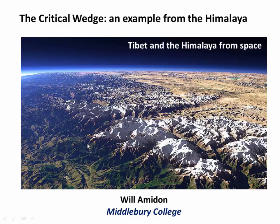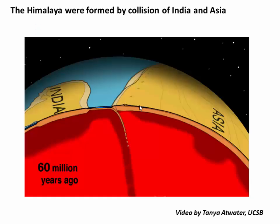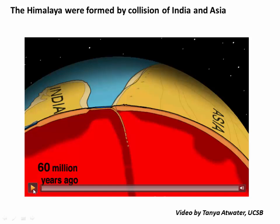A lot of the answers to these fundamental questions come from what's called critical wedge theory. In this video, I'm going to give you a quick overview of the Himalaya, then explain what critical wedge theory is and how it predicts the shape, size, and shortening dynamics of the Himalaya, and then we'll finish with an example of how focused orographic precipitation in the front of the Himalaya can change the shape and dynamics of the critical wedge. So let's start out with a quick video to set the stage.